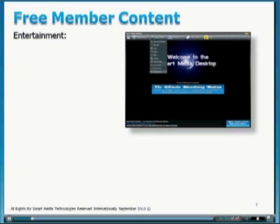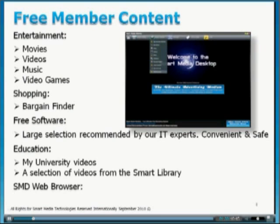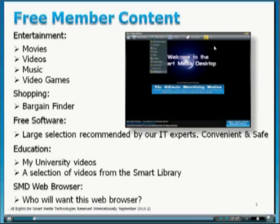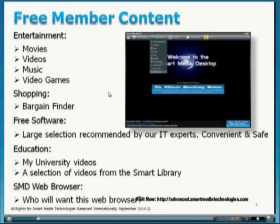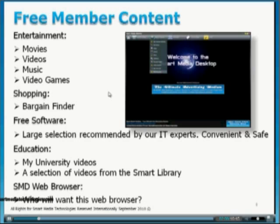Now what I want to talk to you about is what you get for free. You get access to the super content of the Smart Media Desktop. As a free member, you download it, it sits on your computer, and whenever you want to access it — lifetime access, free forever — you get hundreds of movies and videos, music stations, and hundreds of video games. You also get our super bargain finder, the ultimate online shopping tool. If you like to shop and save money, go and try the super bargain finder. It is absolutely brilliant, friends.